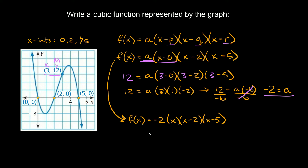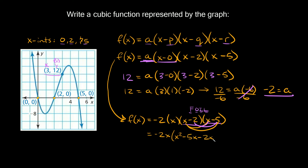Now multiplying all this together: negative two times x gives us negative 2x, and then we have the binomial (x minus 2) times (x minus 5). To multiply two binomials we use FOIL — first, outer, inner, last. Multiplying that out we get x squared minus 5x minus 2x plus 10. Combining like terms, negative 5x and negative 2x gives negative 7x, so this equals negative 2x times (x squared minus 7x plus 10).